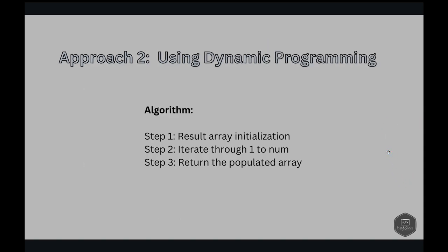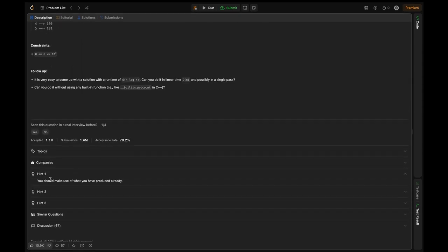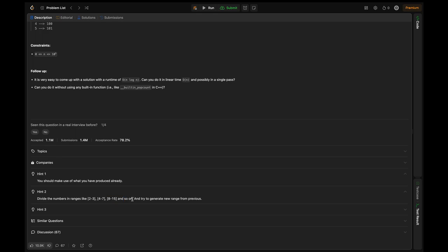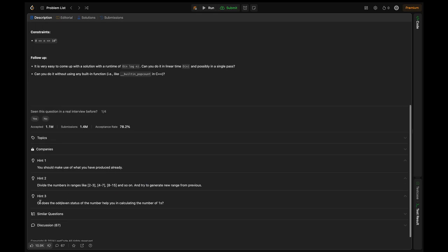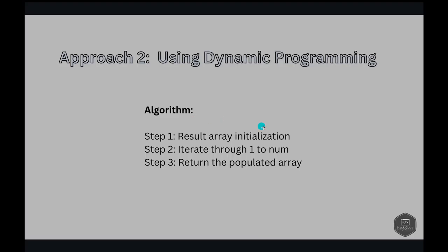Approach 2: using dynamic programming. Before that, let's go over the hints provided in the question. Hint 1: you should make use of what you have produced already. Hint 2: divide the numbers in ranges like 2 to 3, 4 to 7, 8 to 15, and so on, and try to generate a new range from the previous. Hint 3: does the odd or even status of the number help you in calculating the number of 1s? The key observation is that the number of 1s in a number's binary form is related to its half and whether it's even or odd. We build our solution bottom-up starting from 0, using previously computed values.